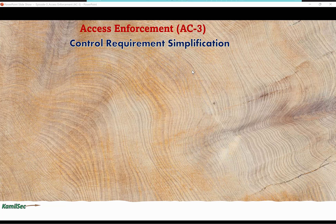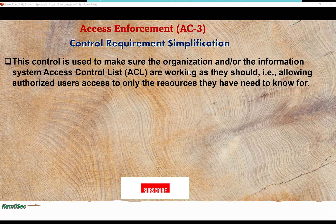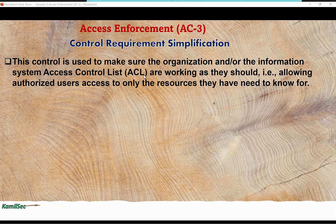Now let's look at the control requirement simplification — how best we can make sense out of this control. This control is used to make sure the organization's and/or information system's access control lists are working as they should, allowing authorized users access to only the resources they have a need to know for. If you're a regular user, you cannot be performing administrator roles or functions. That's what this control is trying to enforce.